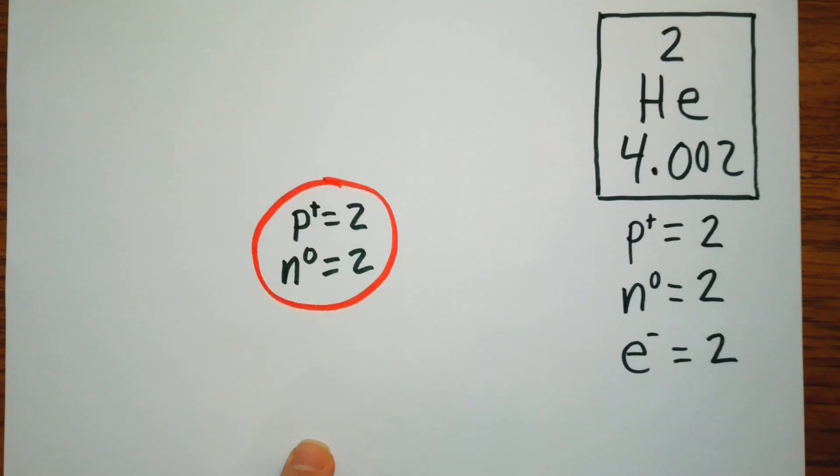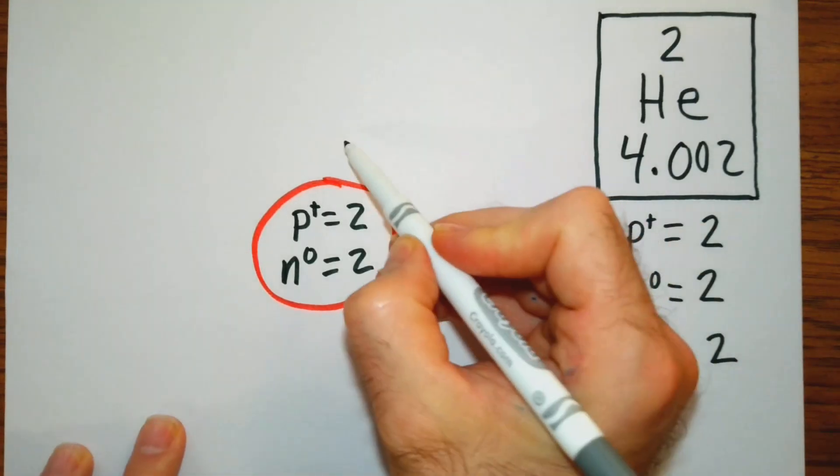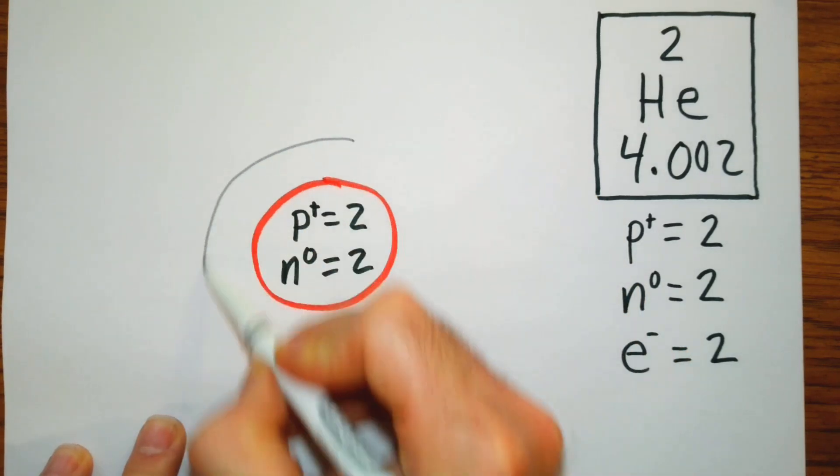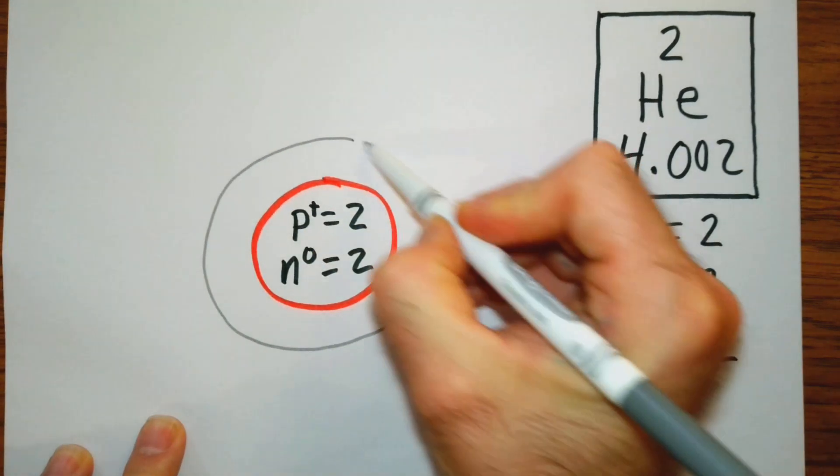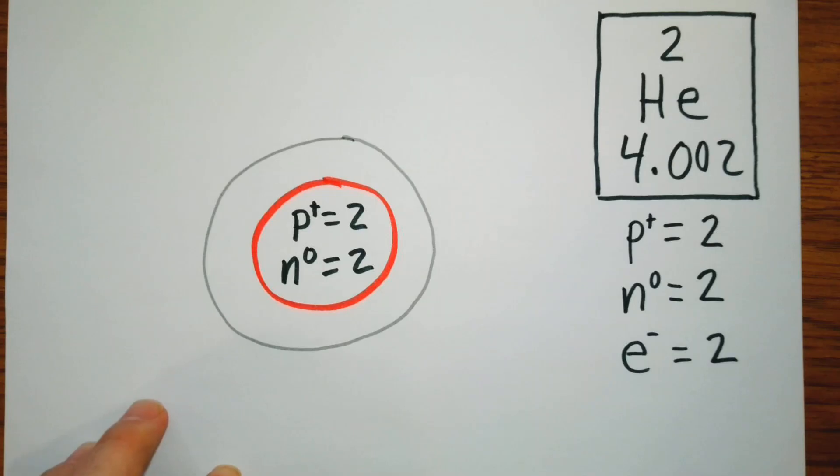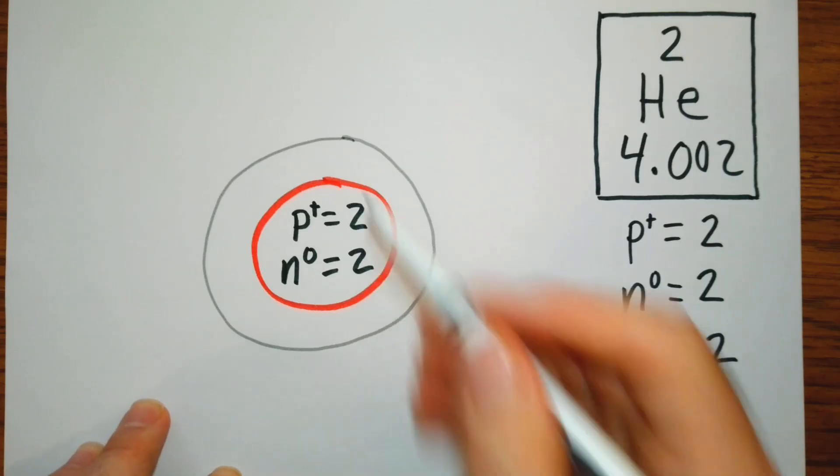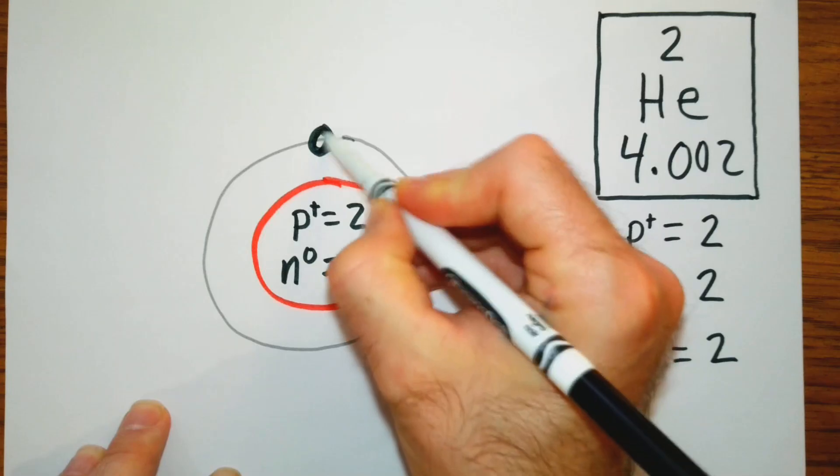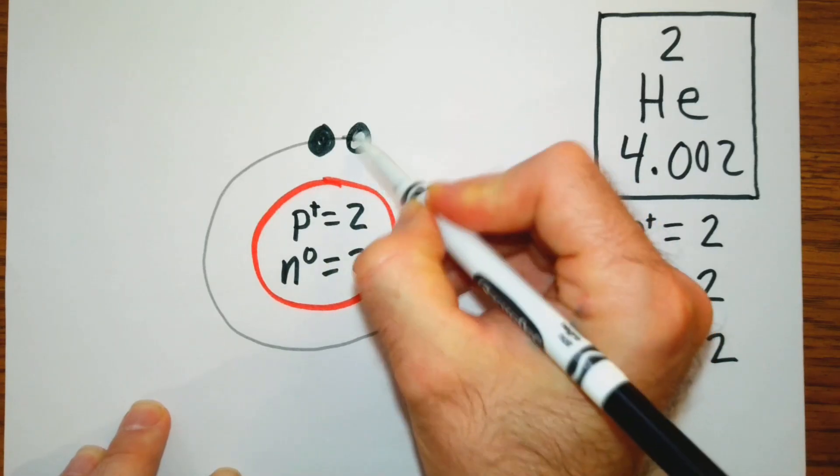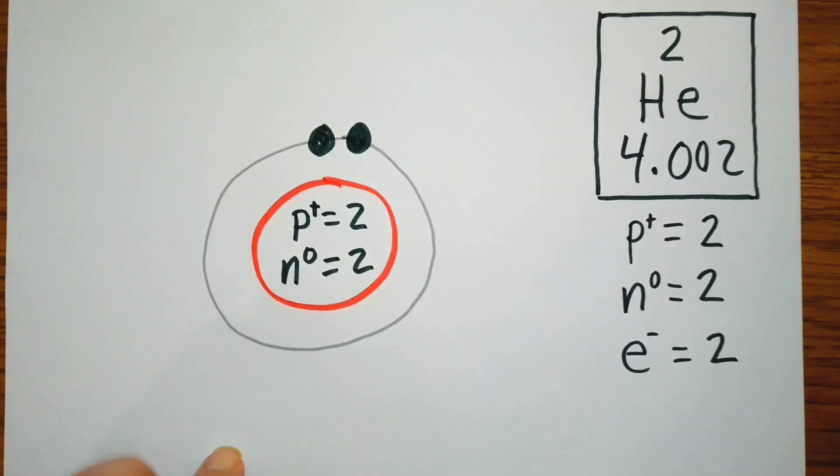Now we have to draw a shell or an orbital, and we're going to fill it up with electrons. So we have two electrons. Well, our first orbital can have a maximum of two. And in this first orbital, these electrons will pair.